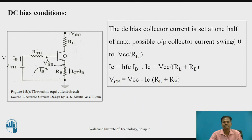The output collector current IC equals the forward current gain of the transistor times the input base current IB. Using Kirchhoff's voltage law applied to the output collector circuit, the output collector current IC is given by IC = VCC / (RL + RE). The collector-to-emitter output voltage under DC condition is given by VCE = VCC − IC × (RL + RE). These are the equations for DC output collector current and DC collector-to-emitter voltage.